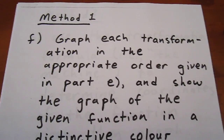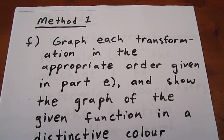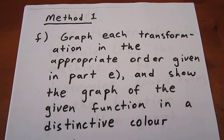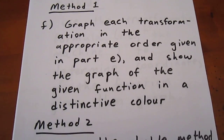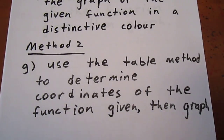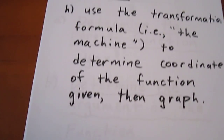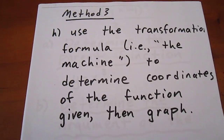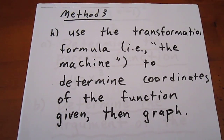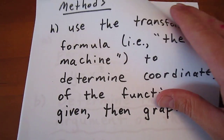The first method we're going to use is to graph each transformation in the appropriate order and show the final graph in a distinctive color. The second is to use the table method to determine the coordinates of the given function. The third is to use the transformation formula, also known as the machine, to determine the coordinates of the given function, then graph it.